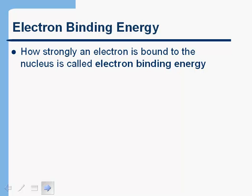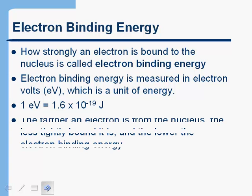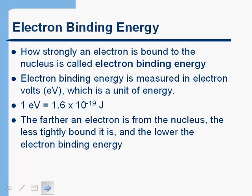The next thing we want to talk about is electron binding energy. How strongly an electron is bound to the nucleus is called the electron binding energy. And electron binding energy is measured in electron volts, which is a unit of energy. And I just wanted to show you how that relates to the unit of energy we've talked about earlier in the course, which is the joule. An electron volt is 1.6 times 10 to the negative 19th joules. So again, it's a very small amount of energy, which is why we use a different unit.